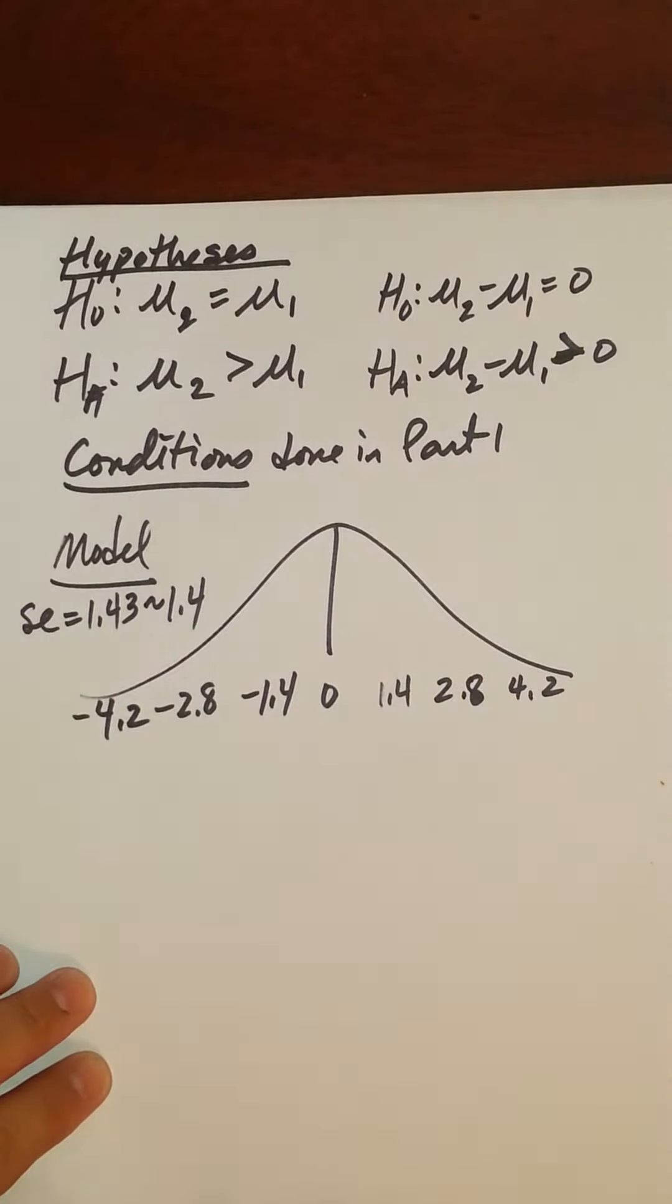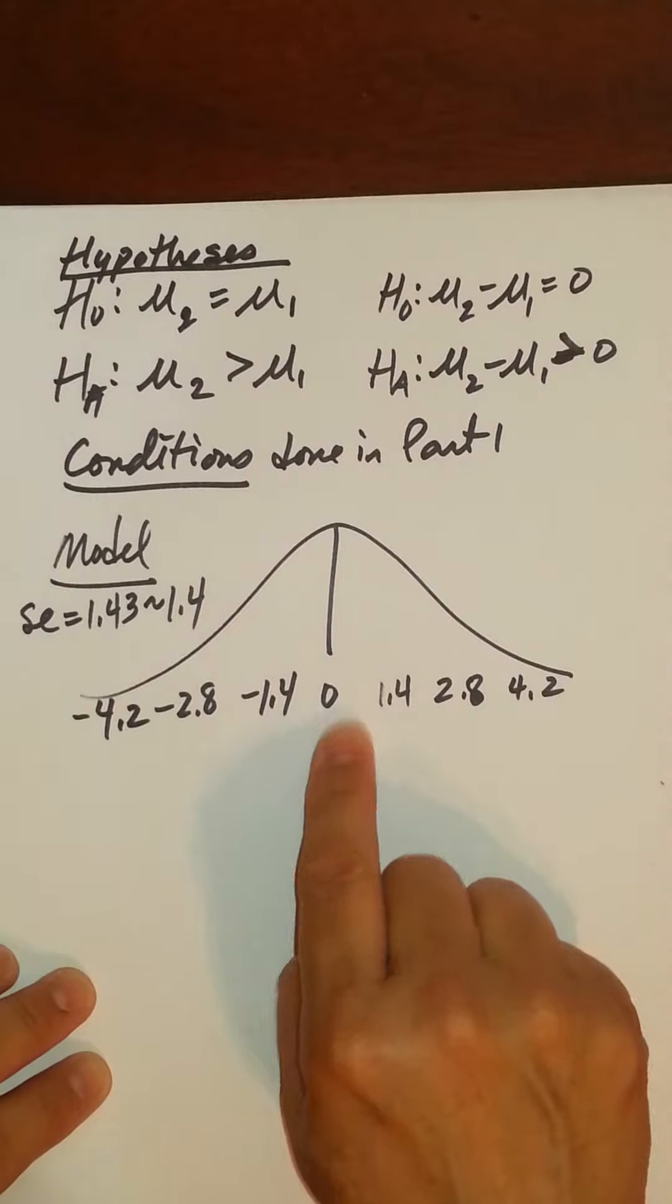And again, you'd have those differences because of sampling variability. Sometimes one sample would be higher, sometimes the other one would be higher, even though on average there's no difference.